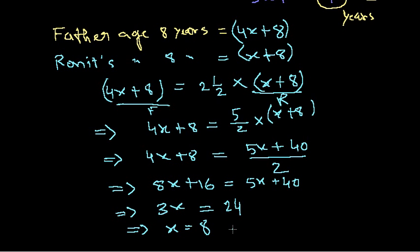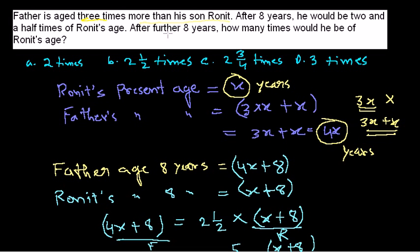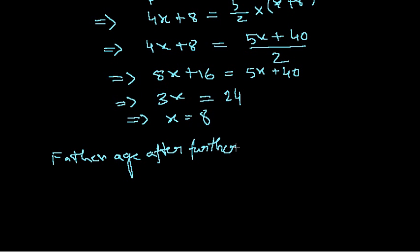Now we need to answer the actual question: after a further eight years, how many times would the father be of Ronit's age? The question is asking for the ratio of the father's age to Ronit's age after this additional eight-year period. So we need to find father's age after further eight years divided by Ronit's age after further eight years.